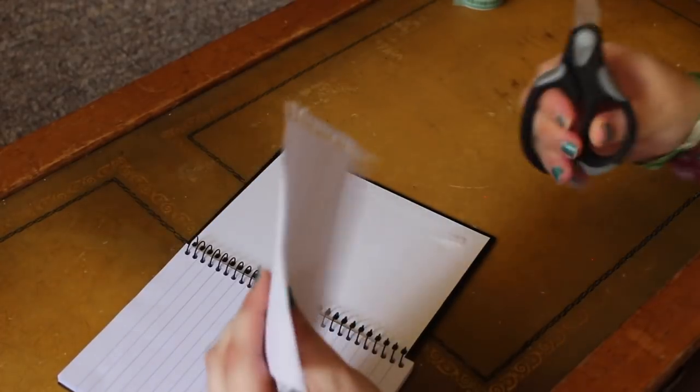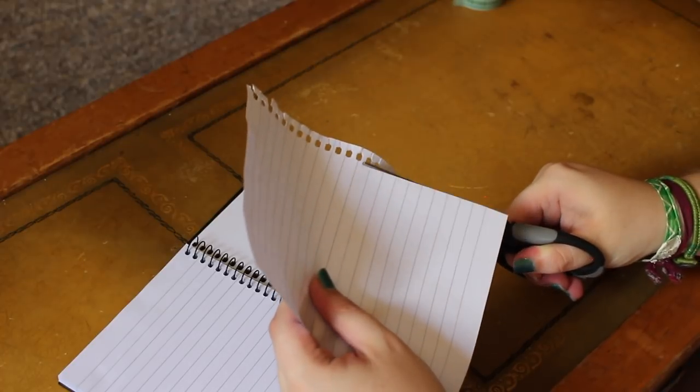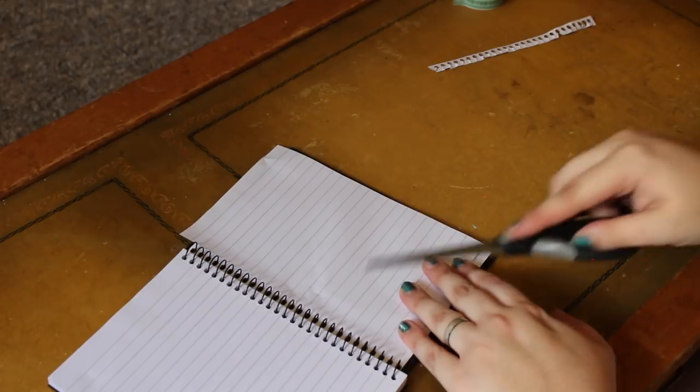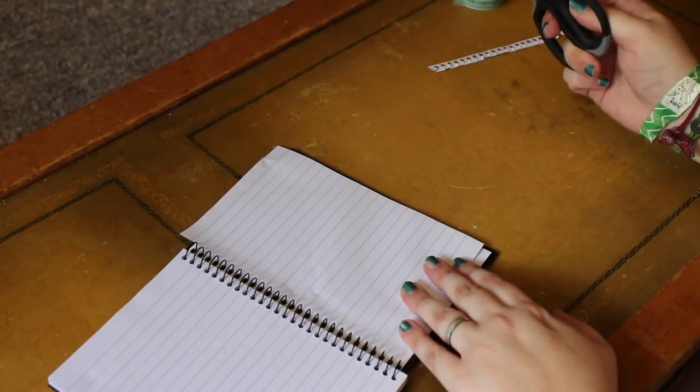And you are going to want to cut these little pieces off of the edge of the paper, if that's the kind of notebook you have. And then what we are going to do is we are going to cut a line like this to make a pocket for the back of the book.